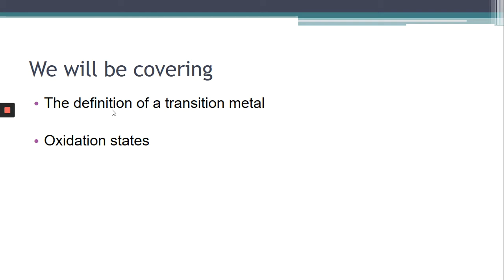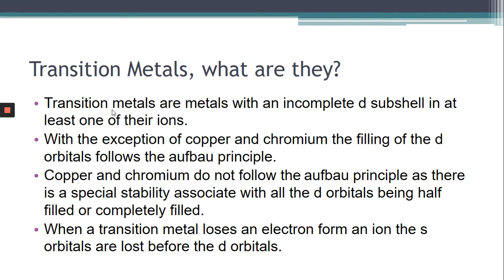We will also touch on oxidation and reduction. Our transition metals, in reality, are not just every element between group 2 and group 3. The true definition states a transition metal is a metal with an incomplete D subshell in at least one of their ions. There are transition metals that we would think of as transition metals that do not form an ion with an incomplete D subshell. That's why that's important.